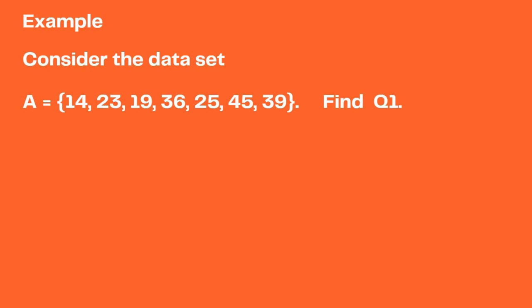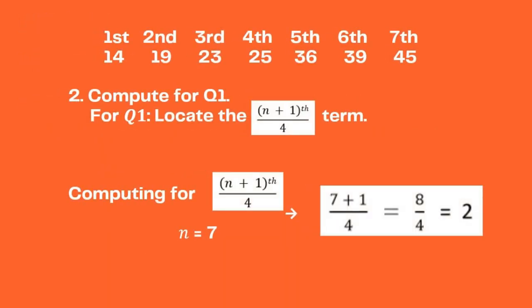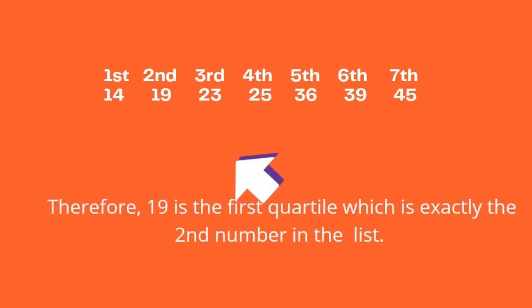To find the first quartile, the first step is to arrange the data in increasing order and label the positions. So our data set becomes: 14, 19, 23, 25, 36, 39, 45. There are seven observations. The second step is to compute the location of the first quartile using (n + 1) / 4. With n = 7, that is (7 + 1) / 4 = 8 / 4 = 2, meaning the first quartile is on the second term. Therefore, 19 is the first quartile.